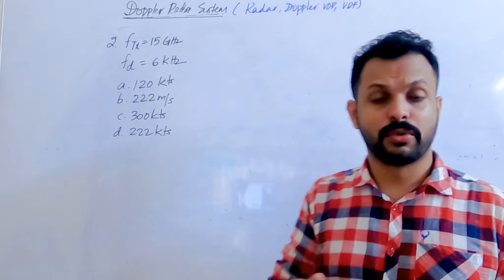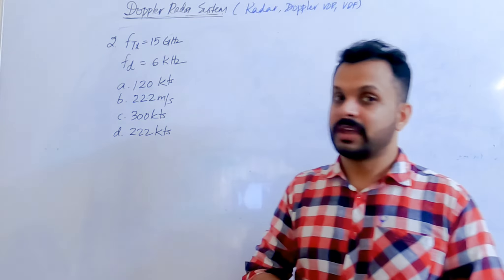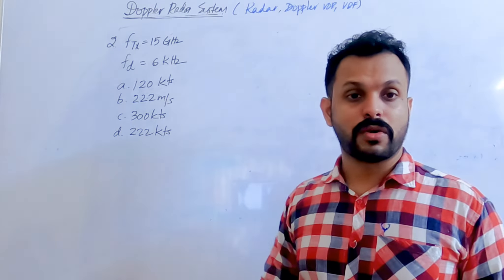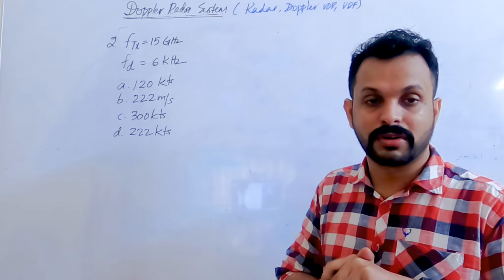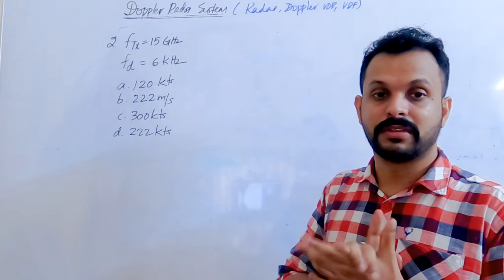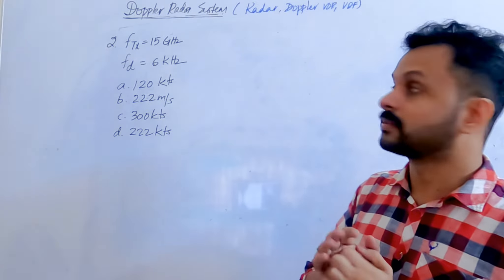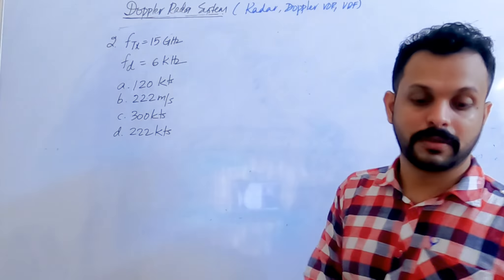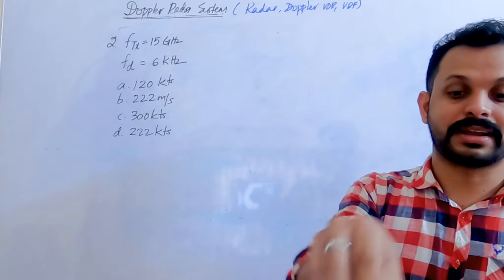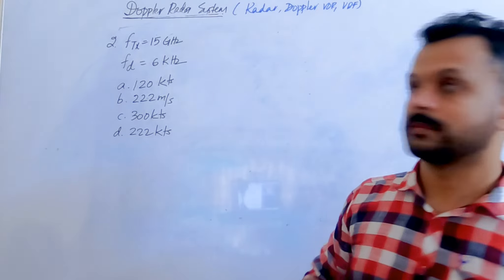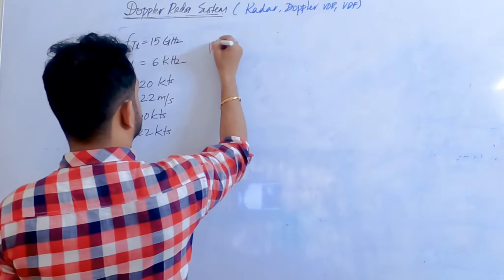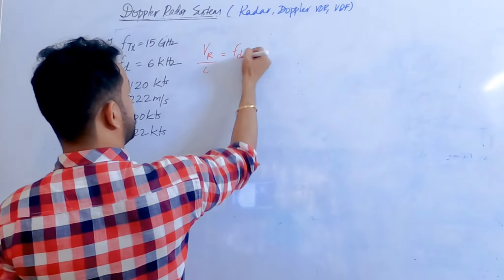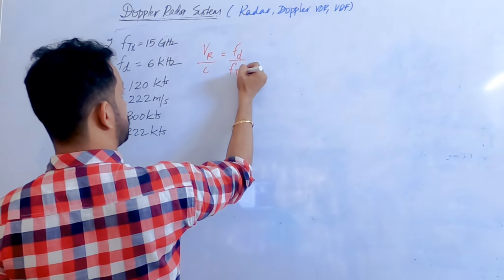The aircraft is moving towards the station at some velocity and you have to find out the frequency. The change in frequency observed is basically the frequency shift, which is the Doppler frequency or beat frequency of 6 kilohertz. You're asked to find the velocity using exactly the same equation: relative velocity divided by speed of light equals Doppler frequency divided by frequency of transmitter.